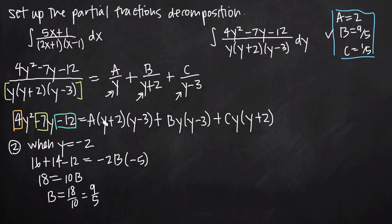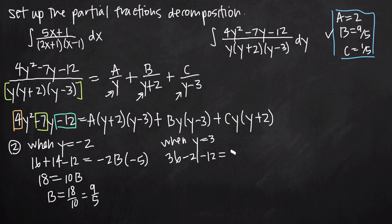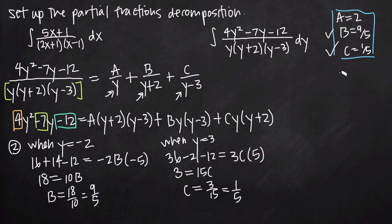Now let's do y minus 3. What do we set y equal to in order to get this factor to equal zero? That's when y equals 3, because 3 minus 3 is zero. Plugging y equals 3 into the left hand side: 4 times 9 minus 21 minus 12 equals 36 minus 33 equals 3. On the right, the A and B terms have the y minus 3 factor so they disappear, leaving c times 3 times 5 equals 15c. So 3 equals 15c, giving c equals 3/15 equals 1/5.